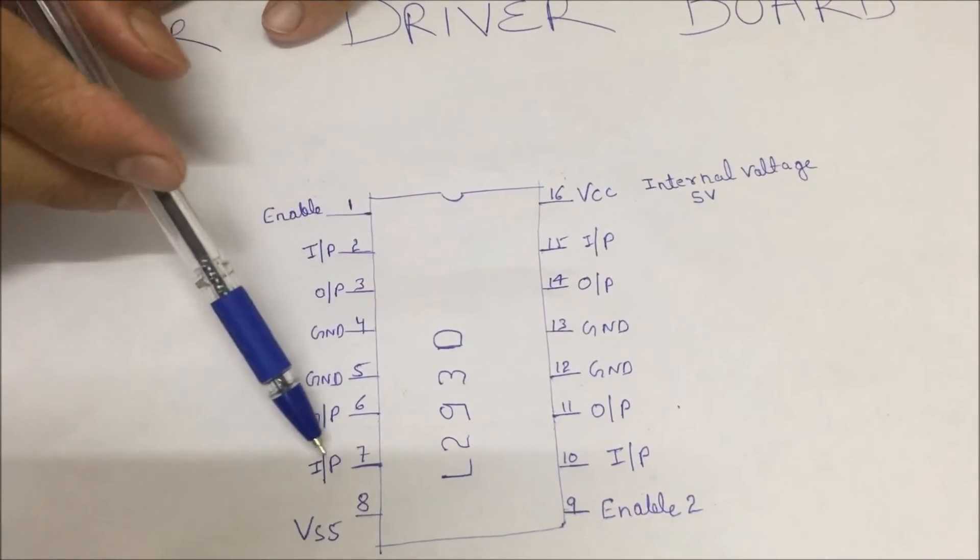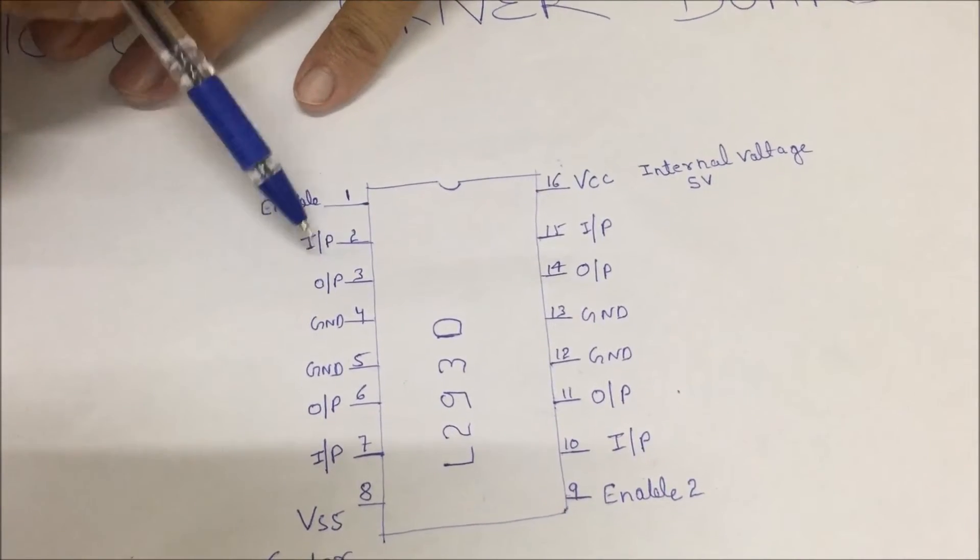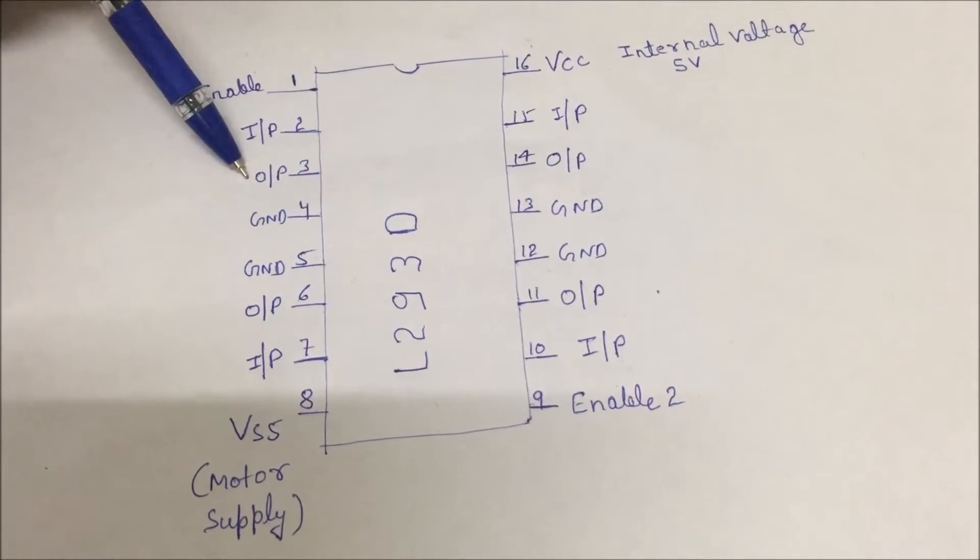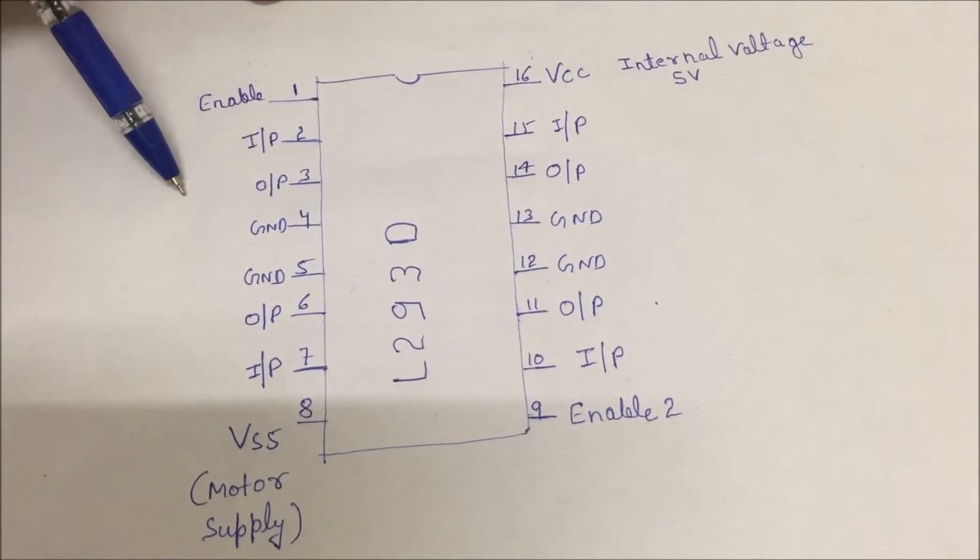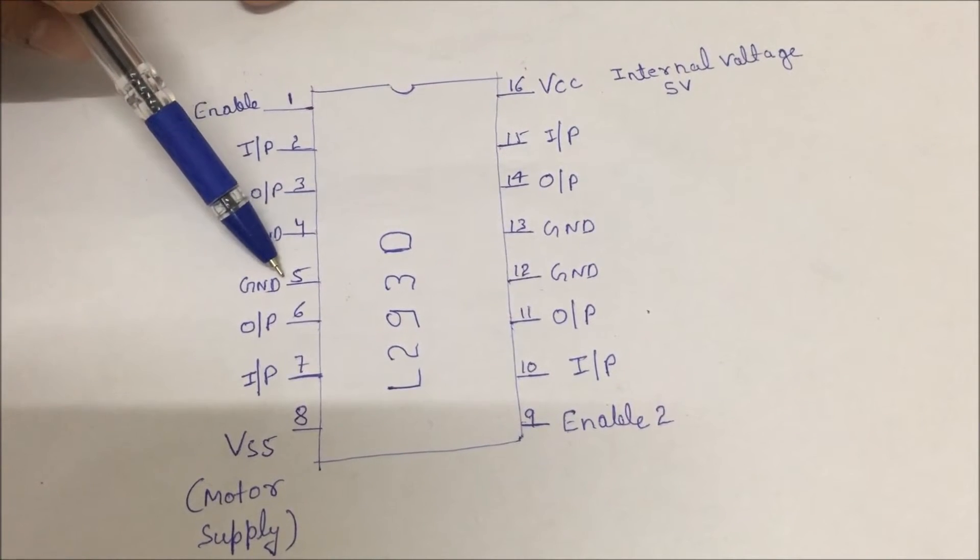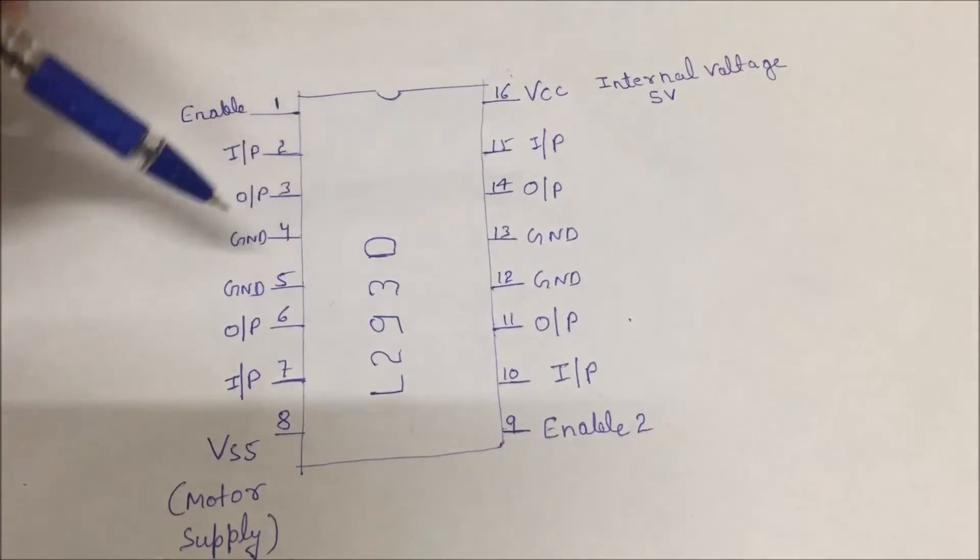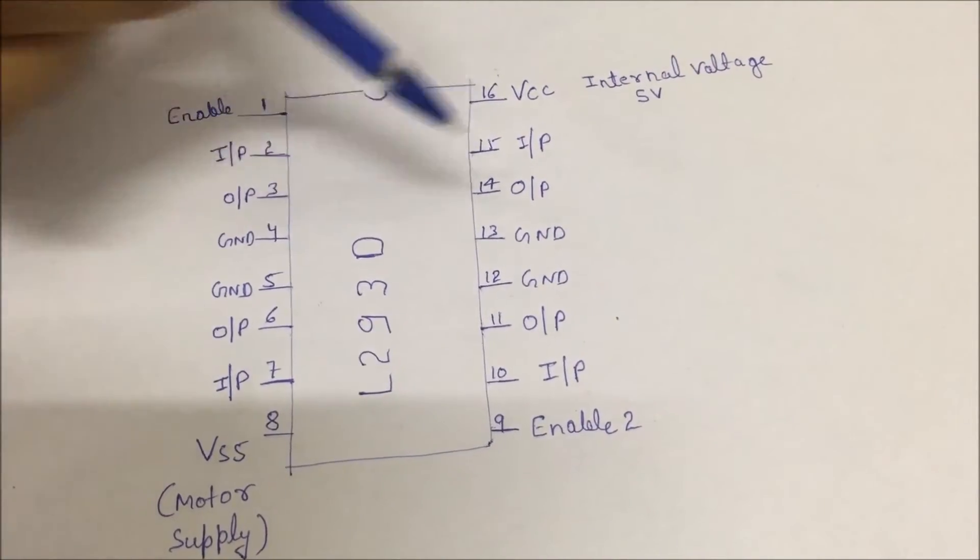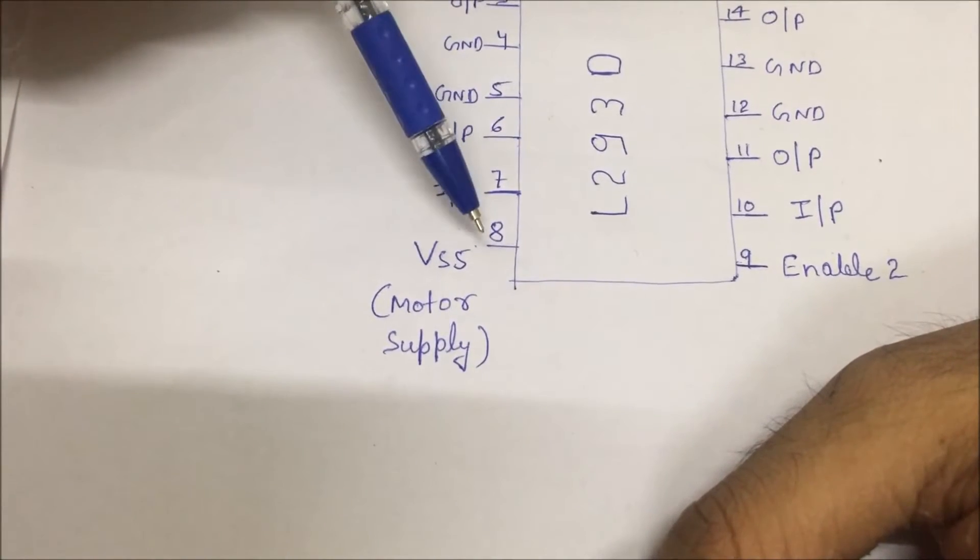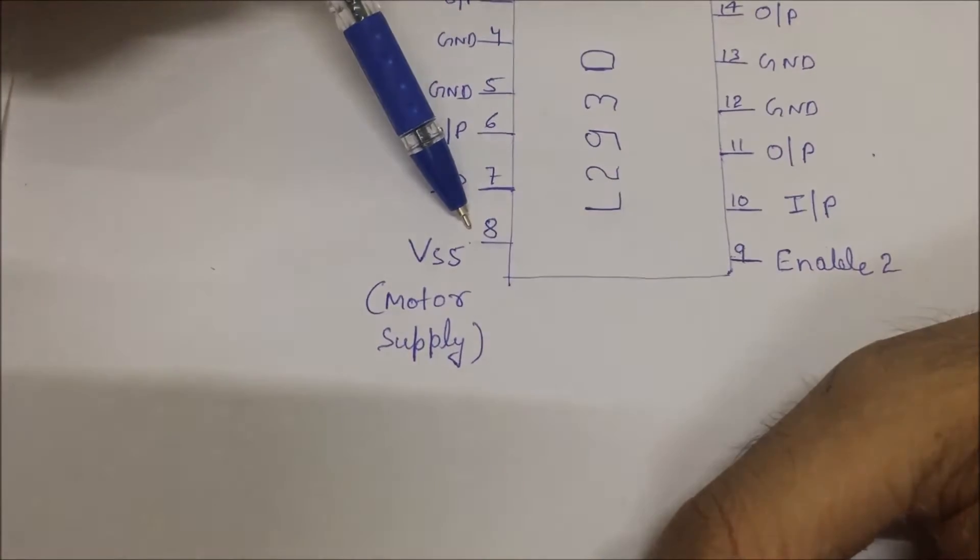Pin number 2 and pin number 7 are input pins which are connected to the microcontroller. Pin number 3 and pin number 6 are output pins which are connected to output device, for example, DC motor. Pin number 4 and pin number 5 are connected to ground. This side works similarly to this side. Pin number 8 is used for motor supply, generally we give here 12V, and maximum we can give here 36V.